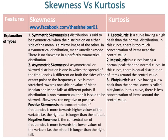Asymmetric skewness: an asymmetrical or skewed distribution is one in which the spread of the frequencies is different on both sides of the center point, or the frequency curve is more stretched towards one side. The values of mean, median, and mode fall at different points. If a distribution is non-symmetrical, then it is said to be skewed. Skewness can be negative or positive.